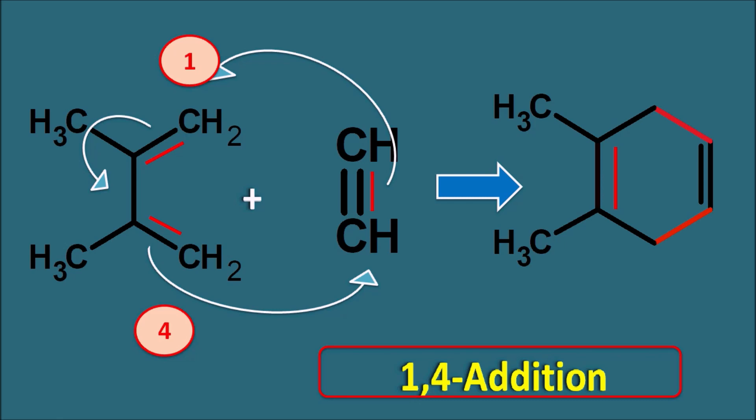In summary, the Diels-Alder reaction is one type of pericyclic reaction which is a cycloaddition reaction, also called a 4+2 cycloaddition, and this 4+2 cycloaddition gives a 1,4-addition product. Now let us look at some examples and see how the product is formed in this cycloaddition reaction.